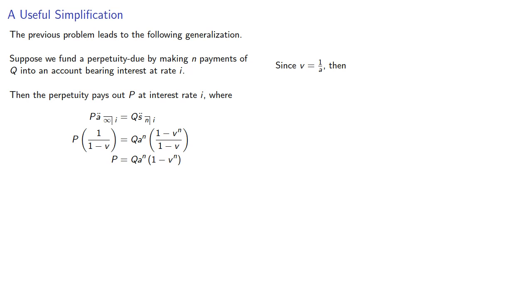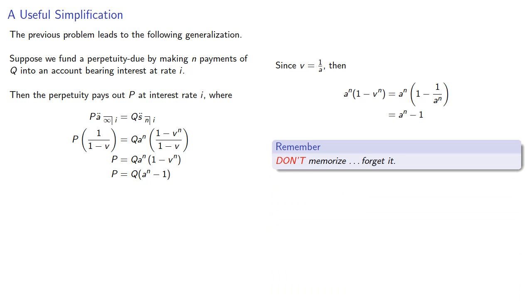We can go one step further since v is the reciprocal of A, then A to the n times 1 minus v to the n simplifies. This gives us a nice relationship between the payment of a perpetuity and the contributions made over a time period. Now remember, don't memorize... Ah, forget it.